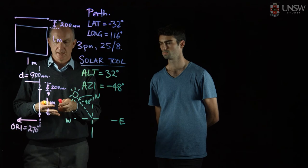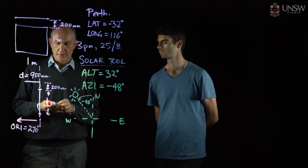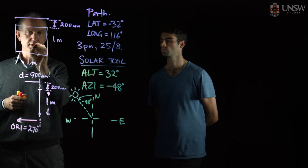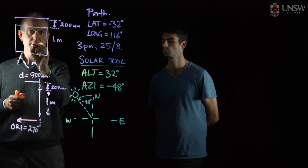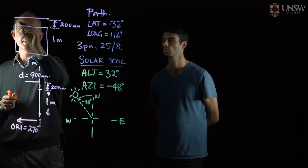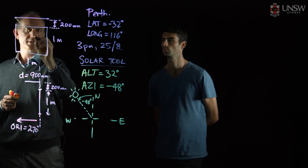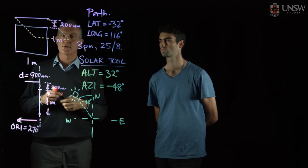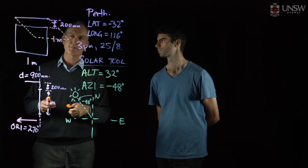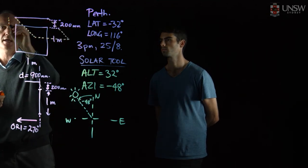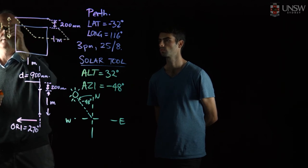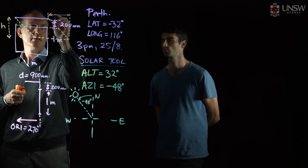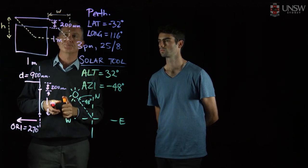So that sets up our problem. Because it's the afternoon and the window faces west, the sun will be northwest. Looking at the window straight on from the west, the shadow will look something like a diagonal shape across the window. We want to calculate the height and the width of the shadow on the window.